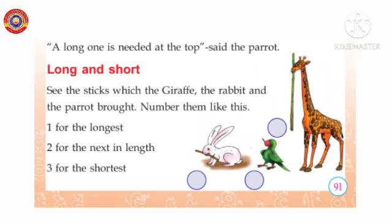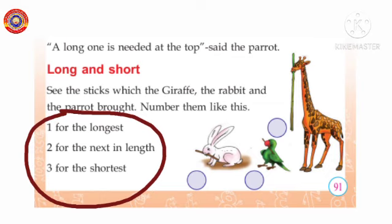Fourth activity: a long one is needed at the top, said the parrot. Long and short. See the sticks which the giraffe, the parrot, and the rabbit brought. Number them like this: 1 for the longest, 2 for the next in length, 3 for the shortest.